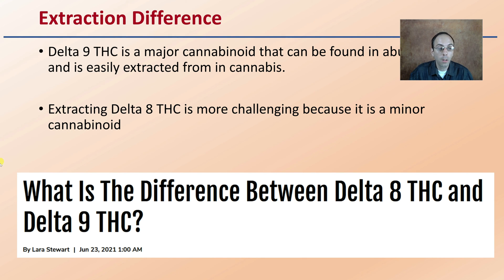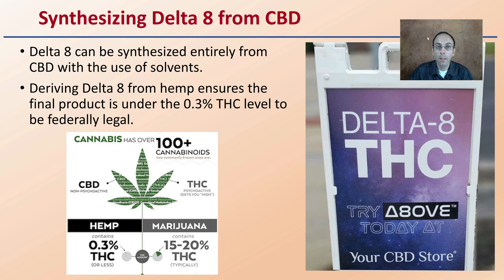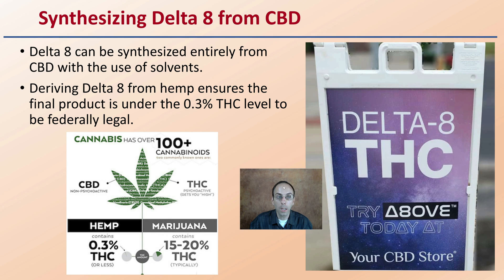There's an interesting article on what the difference is between Delta-8 THC and Delta-9 THC. When synthesizing Delta-8 from CBD, Delta-8 can be synthesized entirely from CBD with the use of solvents. Deriving Delta-8 from hemp ensures that the final product is under the 0.3% THC level to be federally legal. That's a key point — they're staying under the federally regulated 0.3% Delta-9 THC level, which classifies the product as hemp.